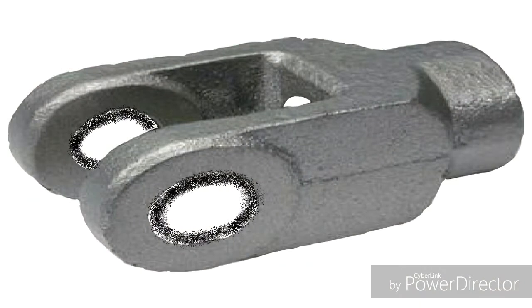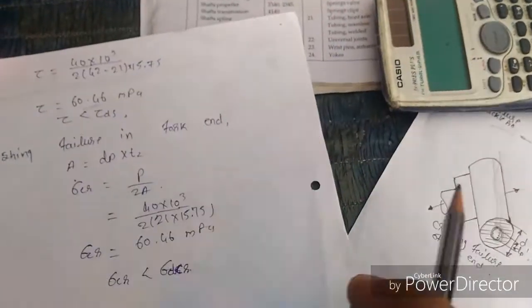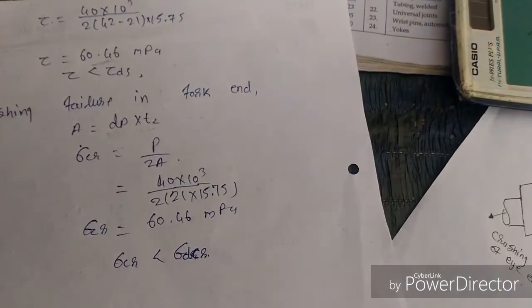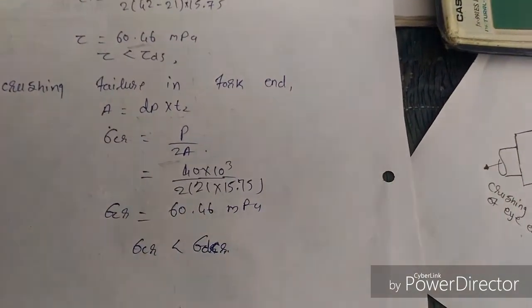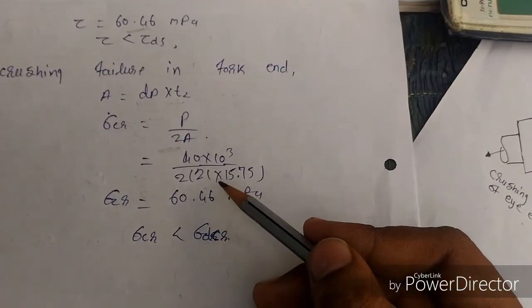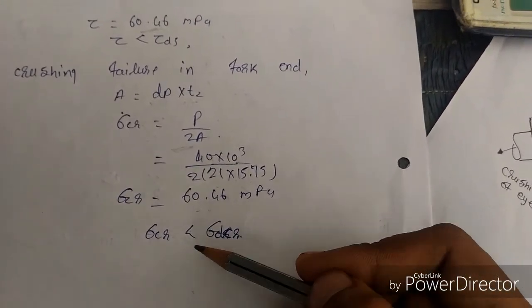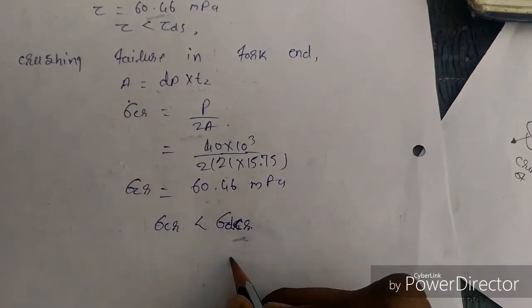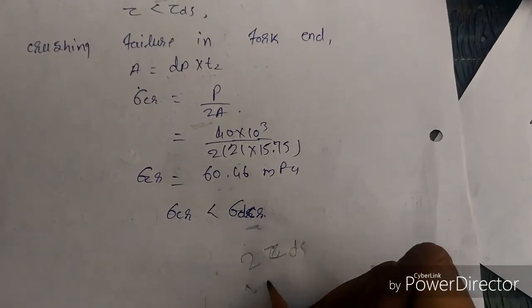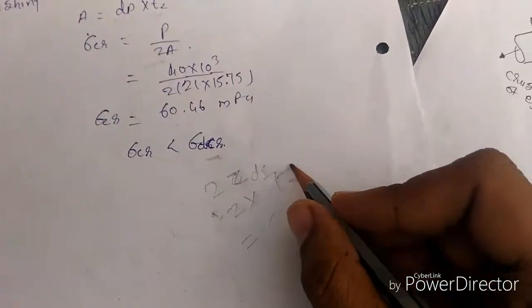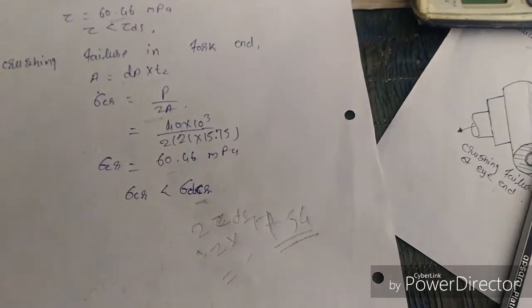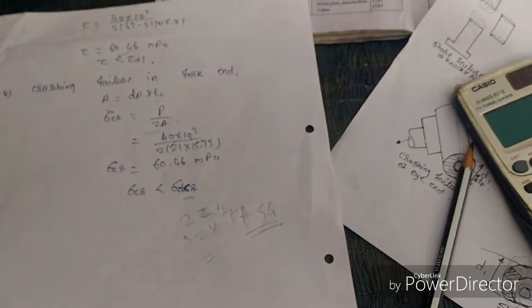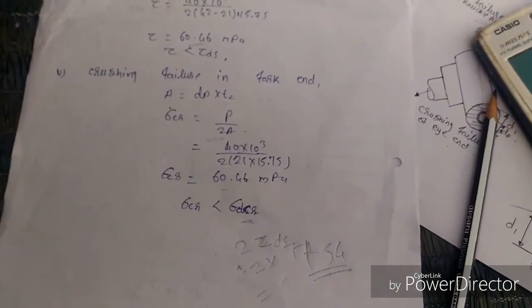Finally, the fork in crushing: the crushing area is 2 × Dp × t2 (two forks). Crushing stress = P / (2 × Dp × t2) = 40×10³ / (2 × 21 × 15.75) = less than the design crushing stress of 154 MPa — safe. This completes the design procedure for the knuckle joint. I hope you understood; if you have any queries, ask in the comment box. Thank you.